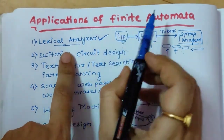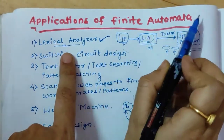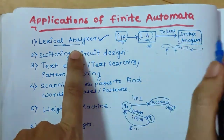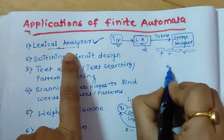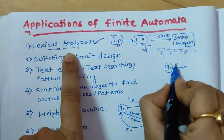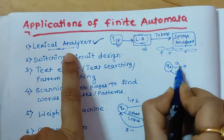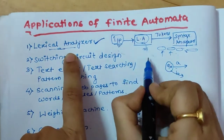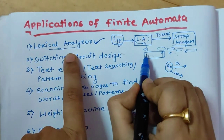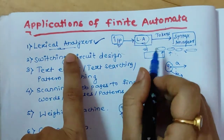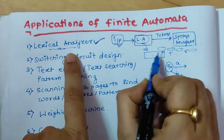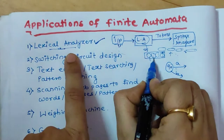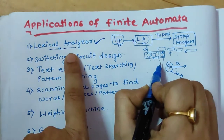Like in theory of computation with finite automata, we process inputs — we have an initial state Q0 and inputs such as 'a', 'b'. In the same way, in lexical analysis, with a given input, we are analyzing the string and we are separating the tokens — that is symbols — from the language.